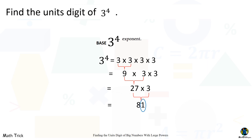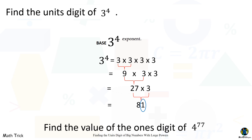To find the unit's digit of numbers with small powers is easy, but what if you are asked to find the unit's digit of large powers, like four raised to the 77th power? How are you going to answer it right away? Since raising to a power is repeated multiplication, we can find the unit's digit with a simple multiplication pattern, even when working with large powers.